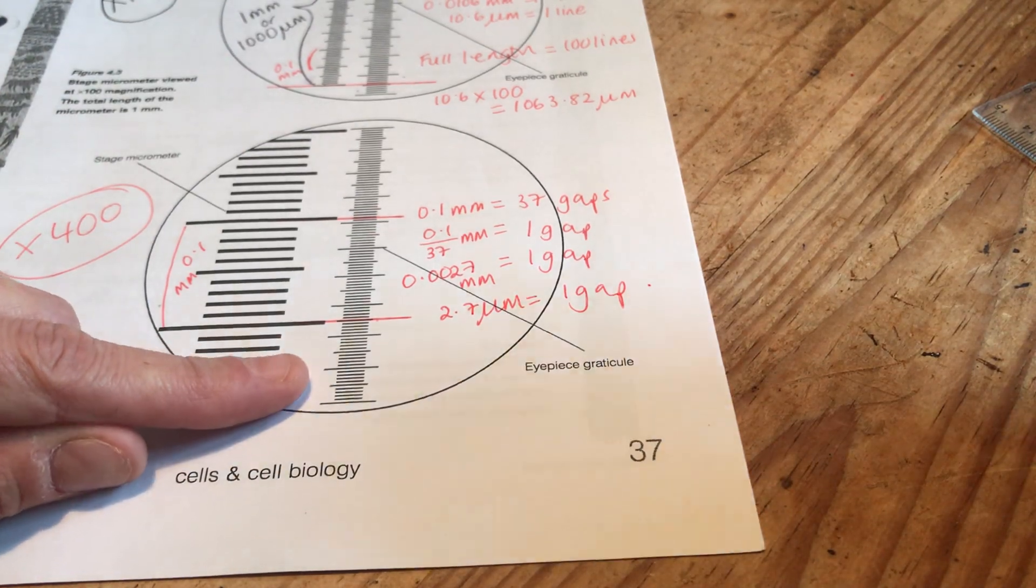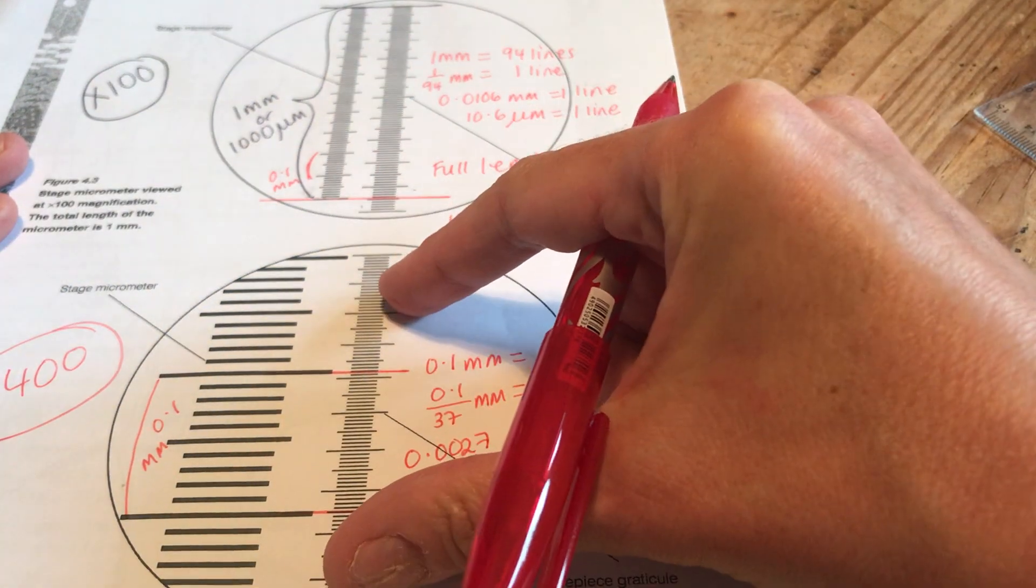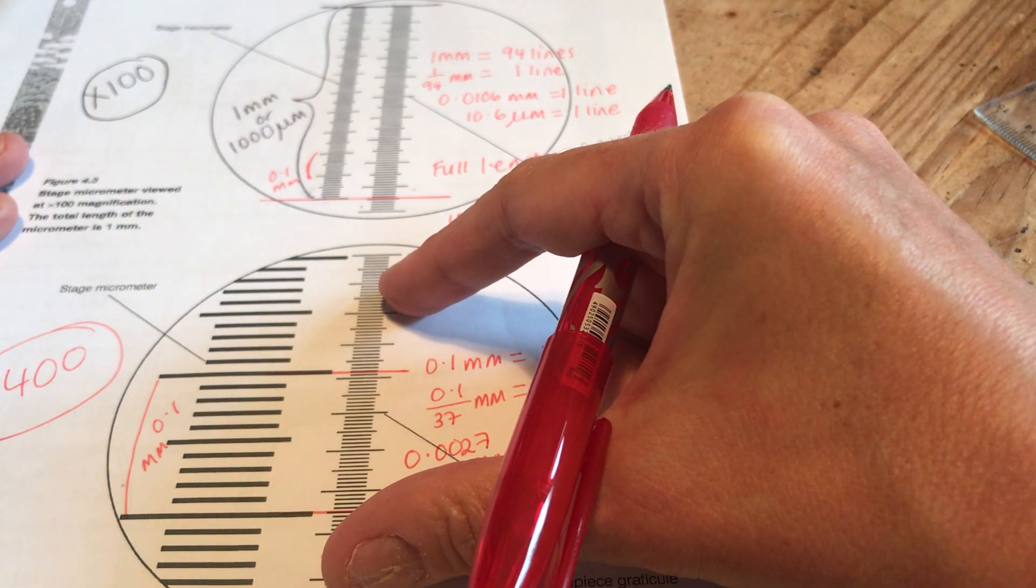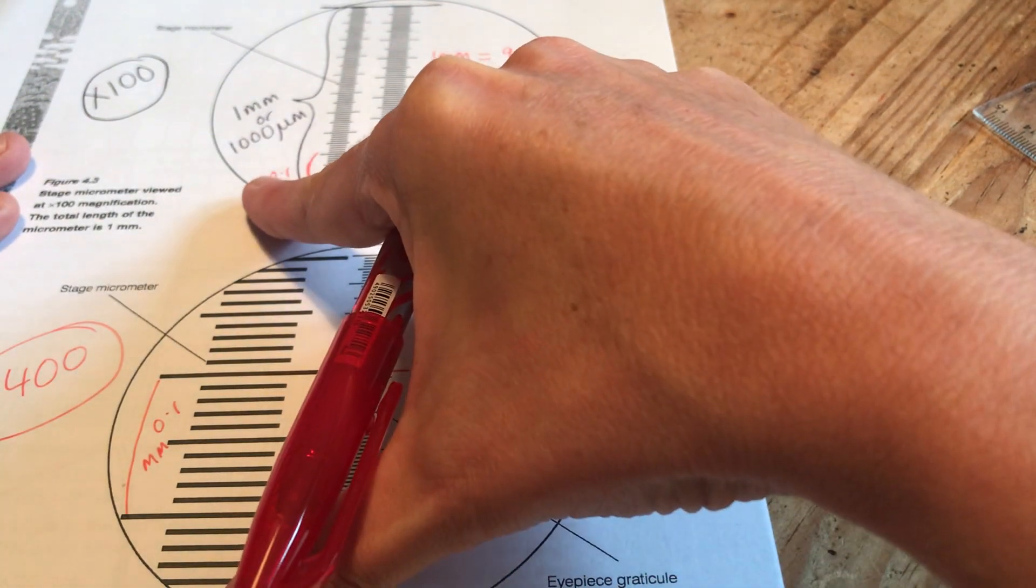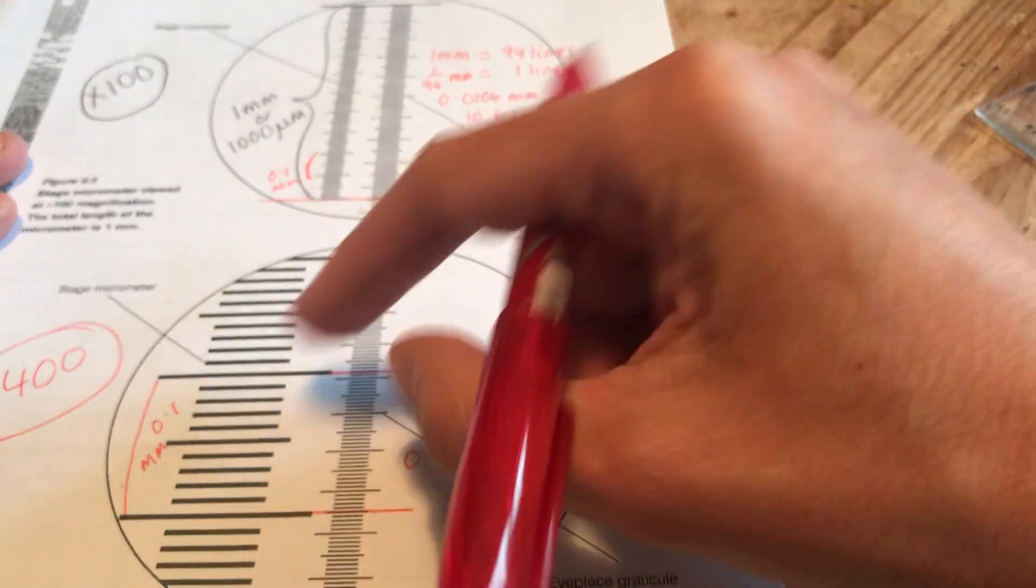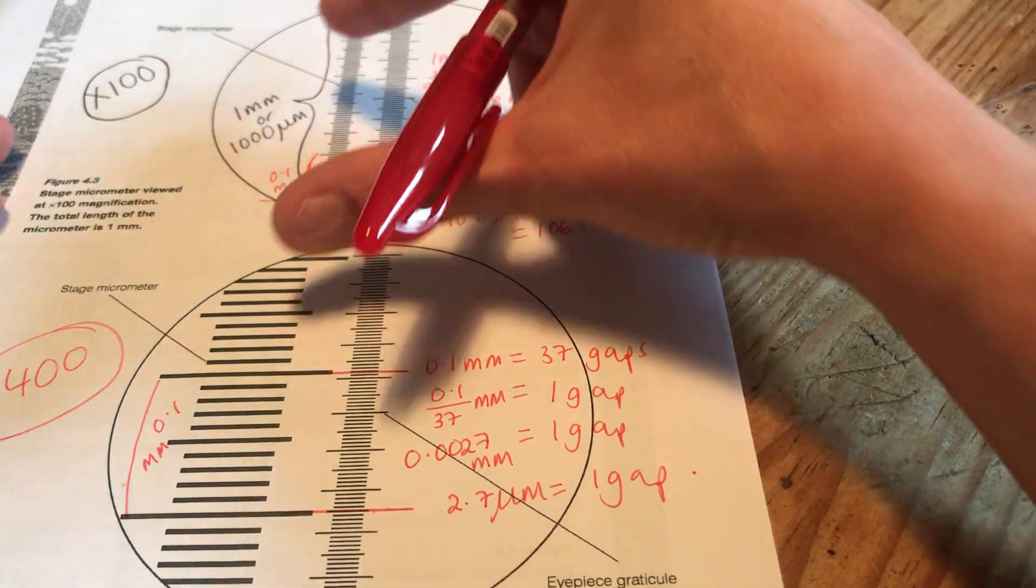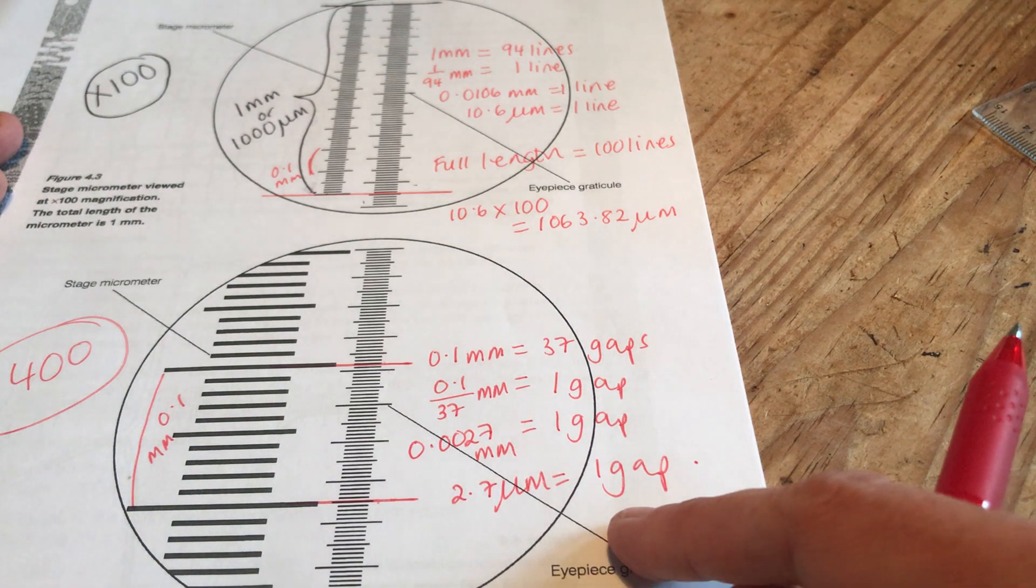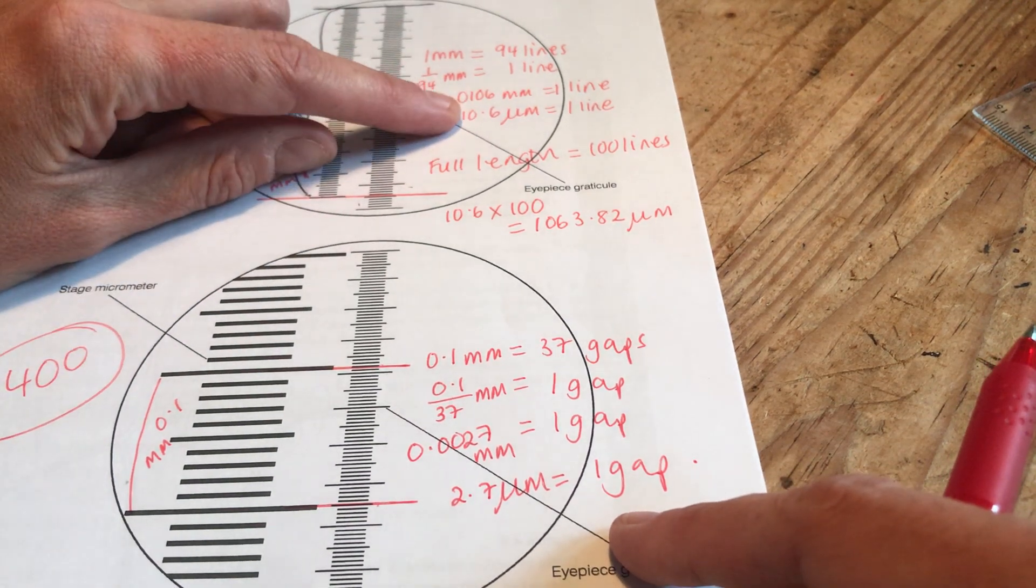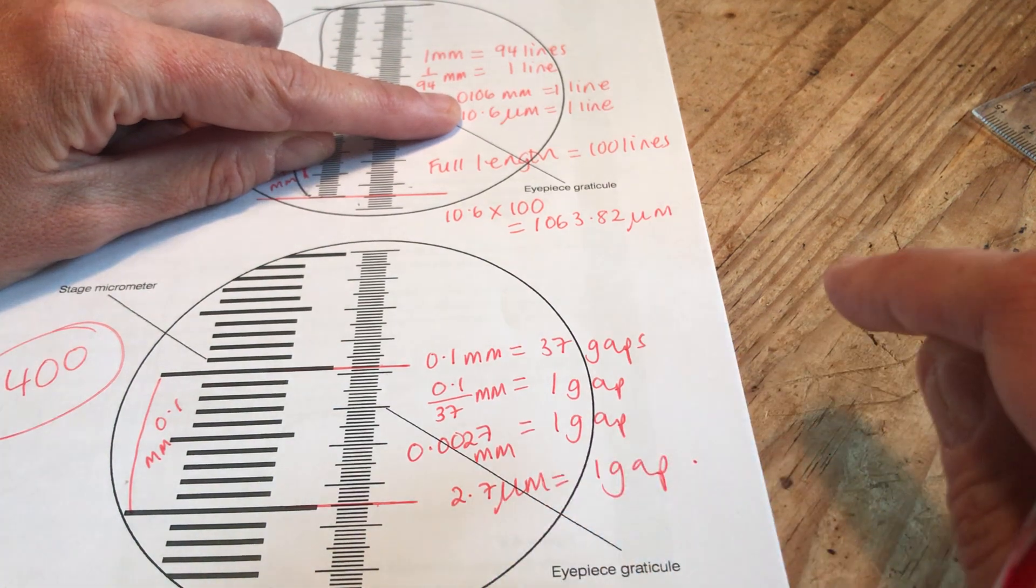So remember the eyepiece graticule always stays the same. It looks the same when you look down the microscope. But as you zoom in on a magnification, you get more and more magnification on the stage micrometer. You're seeing less of it. So before you could see the whole one millimetre. When you zoom in, you can see less. So each gap now, we had one gap here worth 10.6 micrometres. Now my gap is worth much less, 2.7 micrometres. So we were on question three, I think, weren't we? So we've done that one.